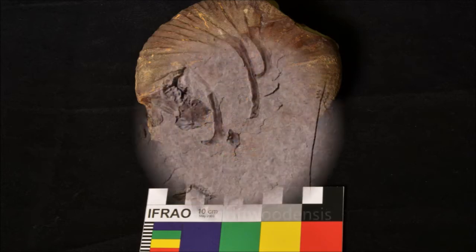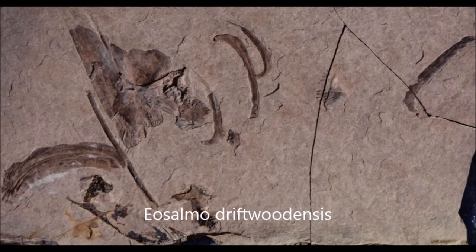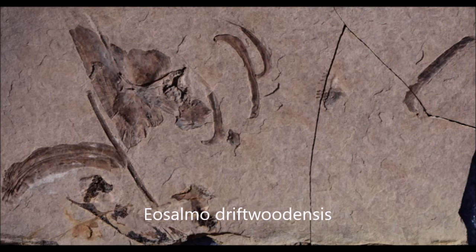We also have fossils in our collection from the Driftwood Creek fossil beds. Located just a few minutes outside of Smithers, the Driftwood Creek fossil beds are famous for fossils of the earliest known species of salmon, Eosalmo driftwoodensis.